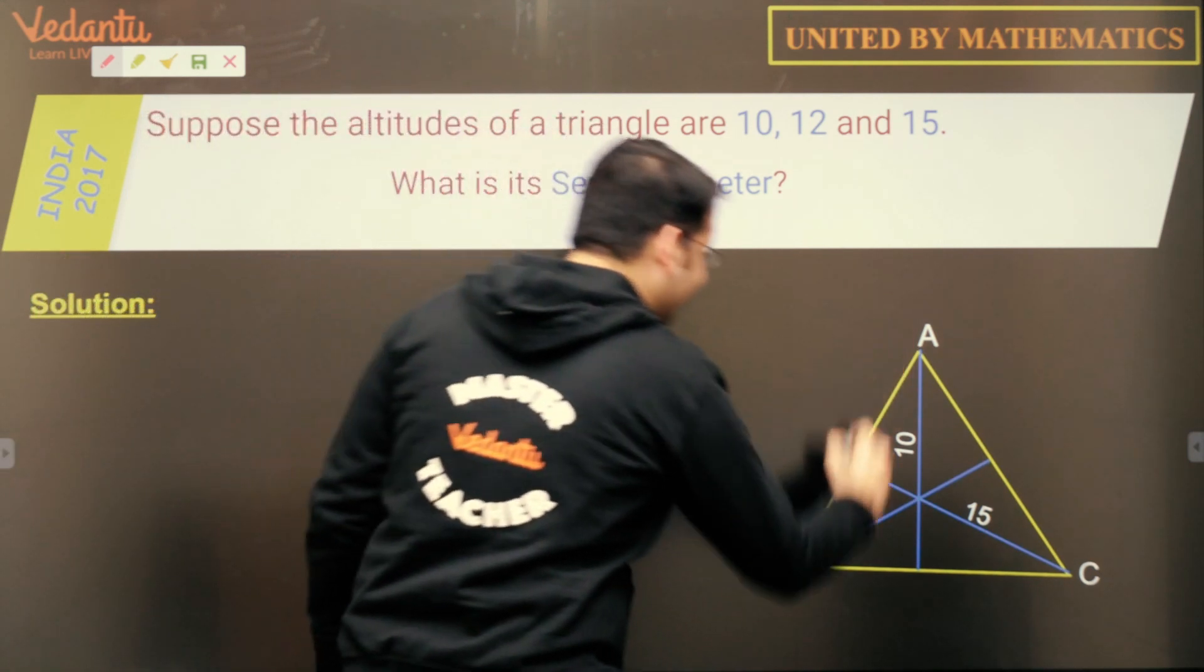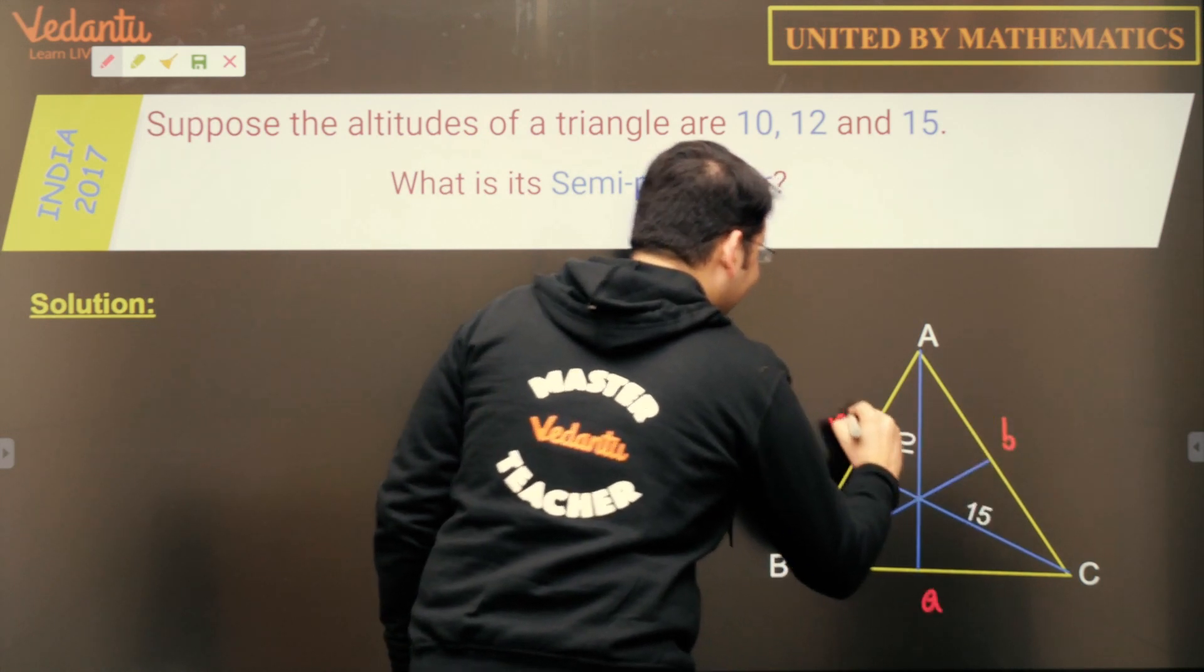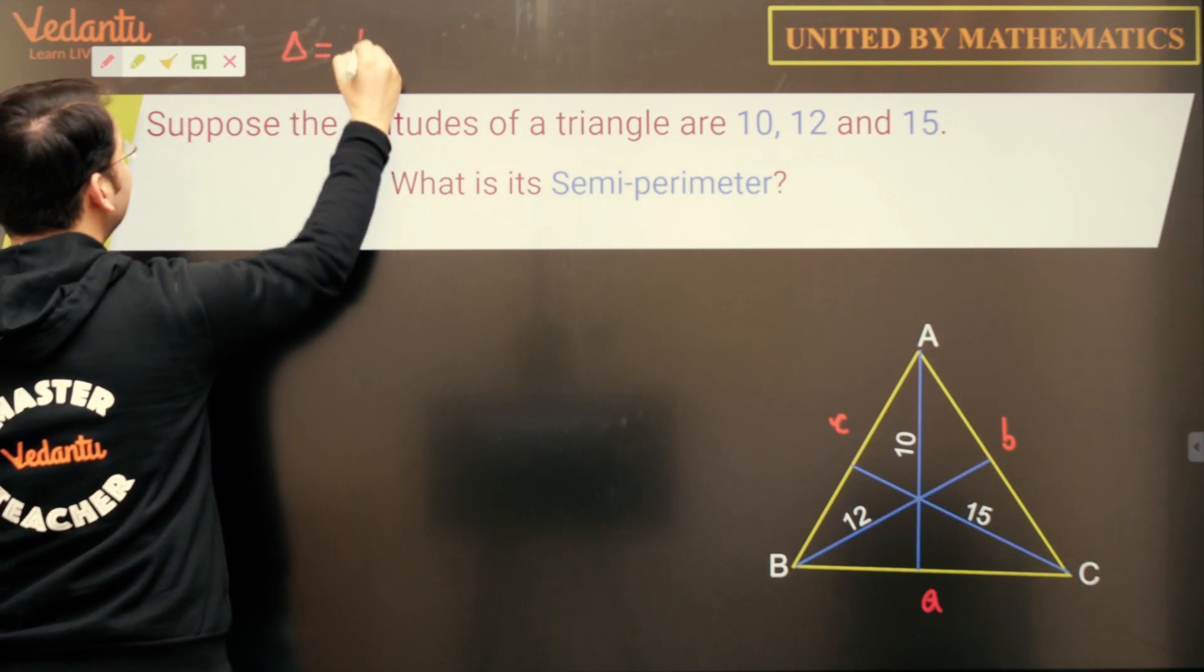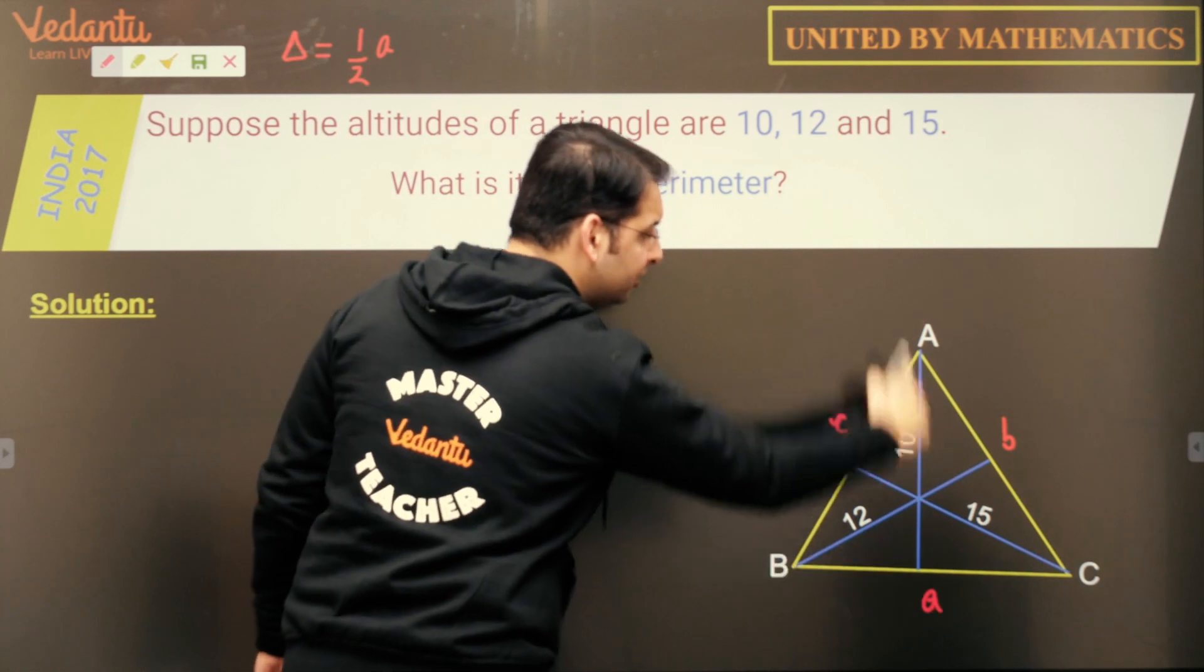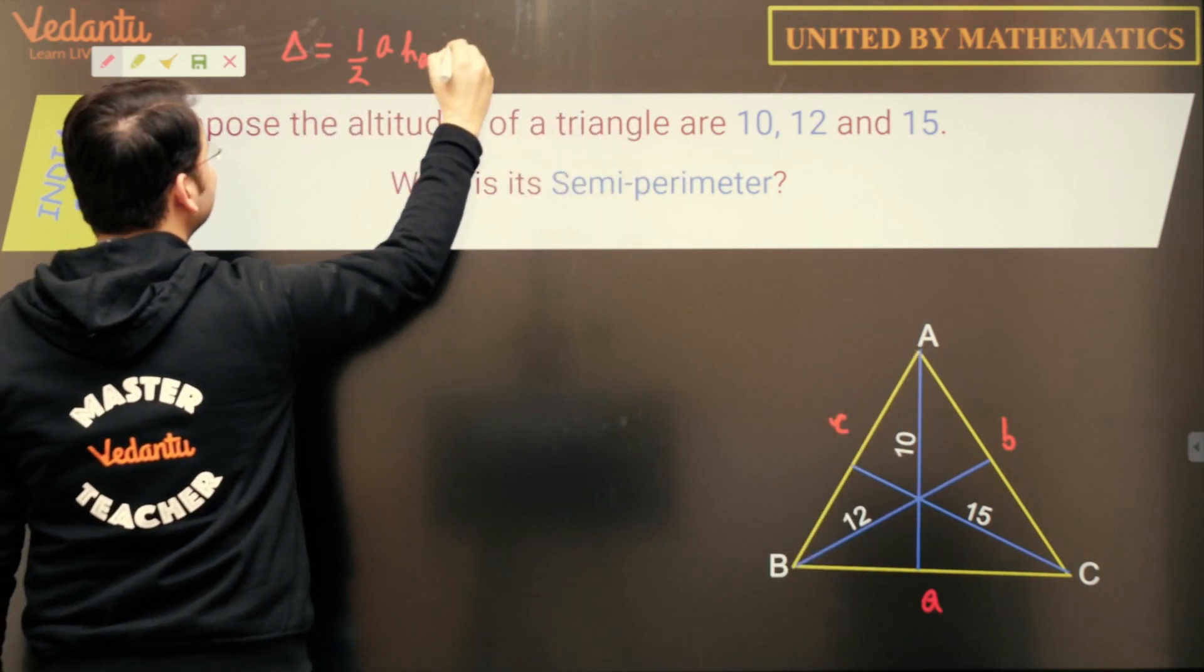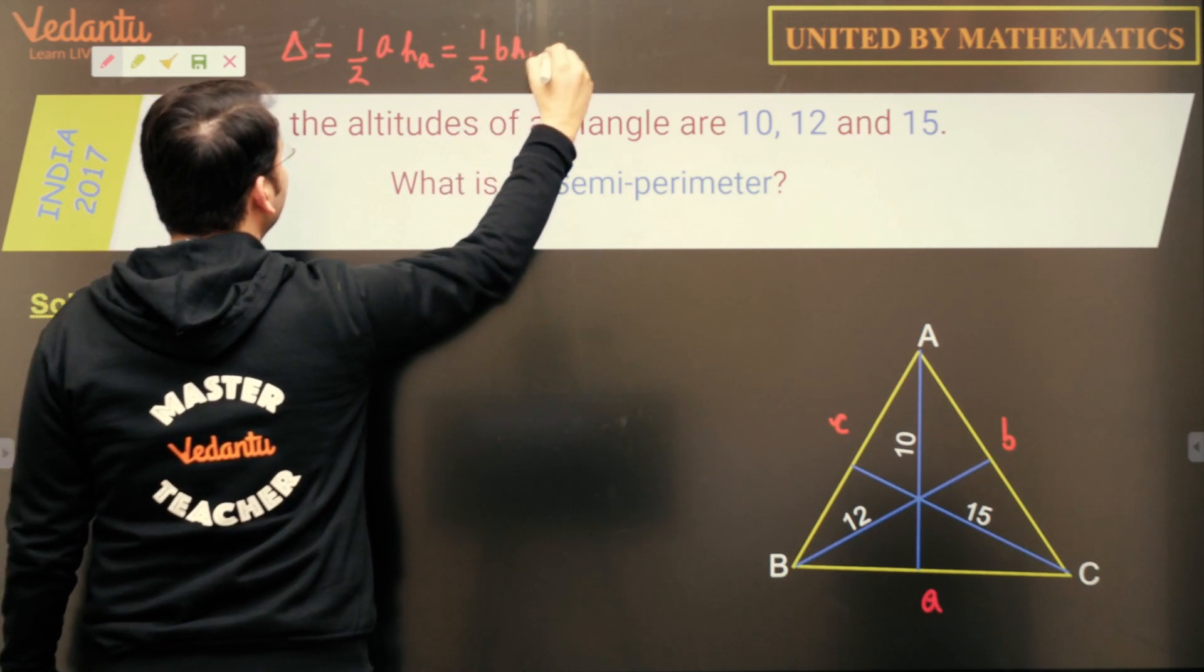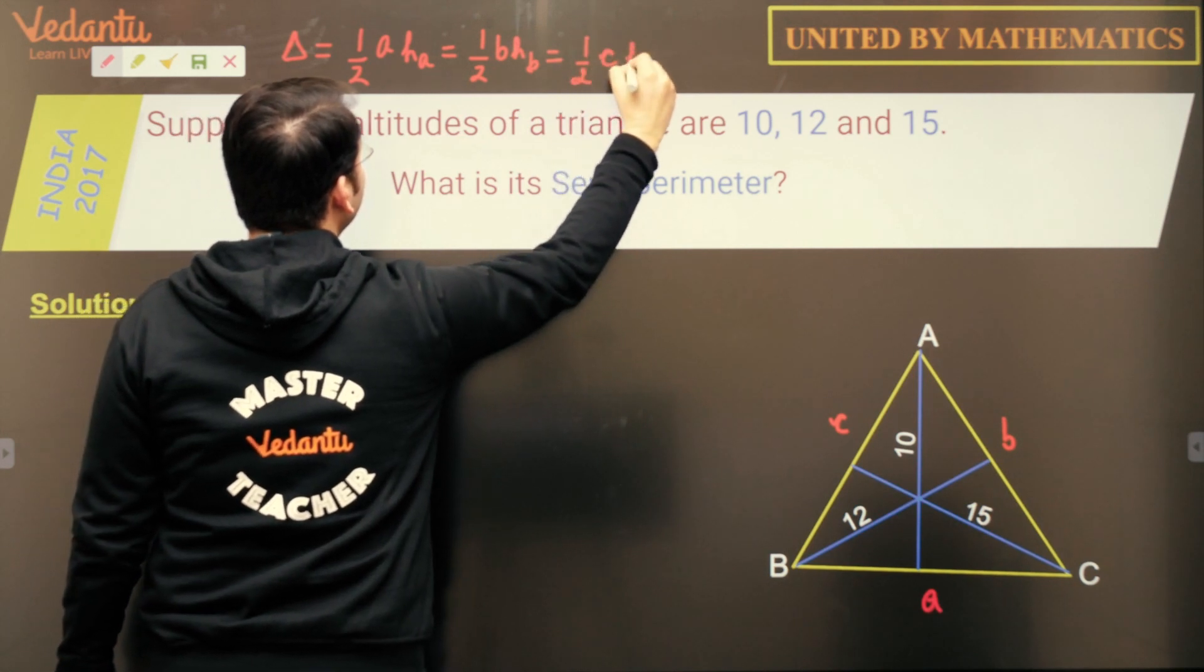So if I assume this side as A, this side as B and this side as C, so clearly the area of the triangle is equal to half into A and let us suppose the altitude from the vertex A is HA, which is 10 in this case. This is also equal to half into B into HB and this in turn is equal to half C HC.